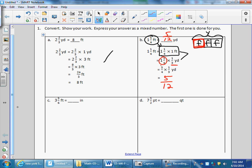C is three and five-sixths feet equals how many inches. So again I'm gonna take that three and five-sixths feet and make it three and five-sixths times one foot. That gets me off on the right step. My next step is to take that one foot and convert it to inches.